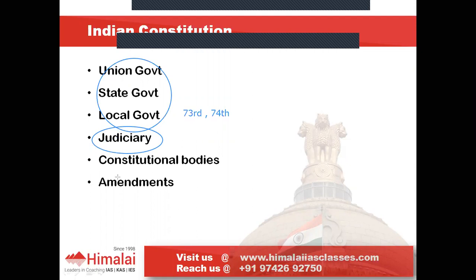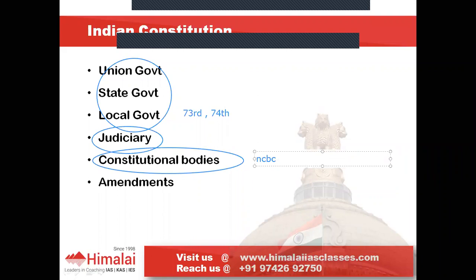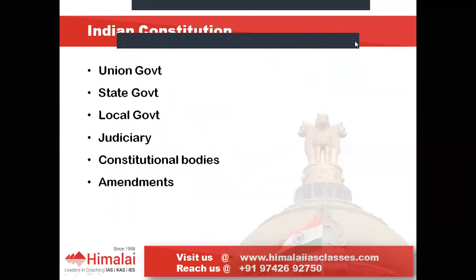Next are the constitutional bodies — different bodies created by the constitution — for example, the Union Public Service Commission, National Commission for Scheduled Castes, National Commission for Scheduled Tribes. Tell me in the comment section which amendment act created the National Commission for Backward Classes, the latest constitutional body to be created. Then there is constitutional amendment — we do not have to mug up all the constitutional amendment acts. We just need to remember the important amendment acts which are mentioned in Lakshmikant as you go through the chapters.